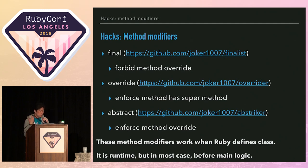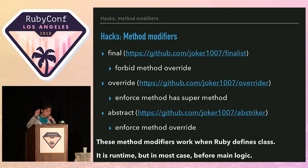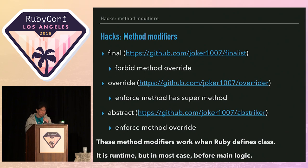These method modifiers work when Ruby defines a class, and it is run time. But in most cases this checking runs before the main application logic. In other words, there is no overhead.